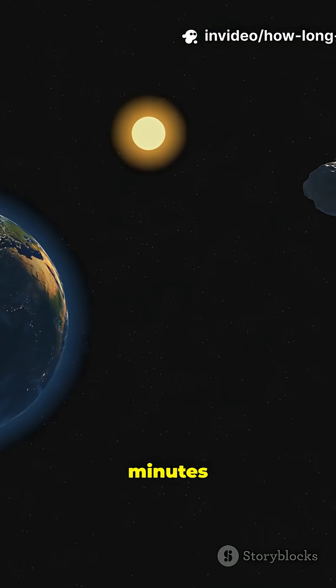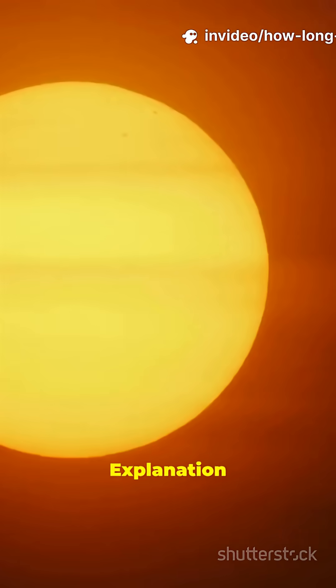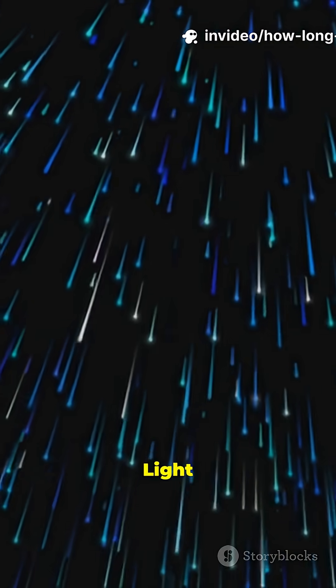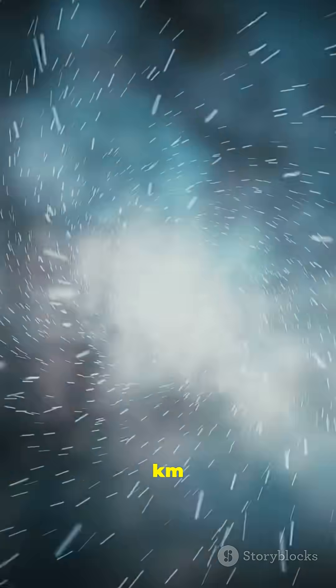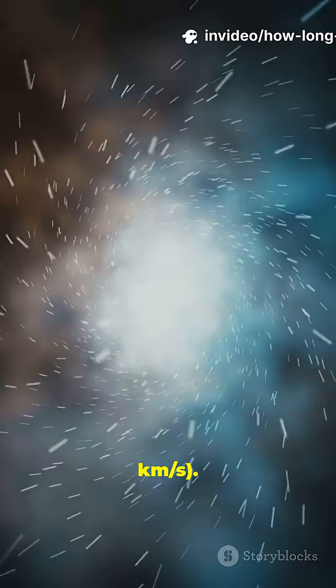Light from the sun takes 8 minutes and 20 seconds to reach Earth. Explanation: Speed of light - light is the fastest thing in the universe. It travels at 299,792 kilometers per second, about 300,000 km/s.